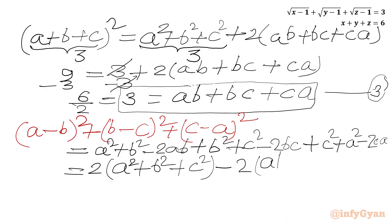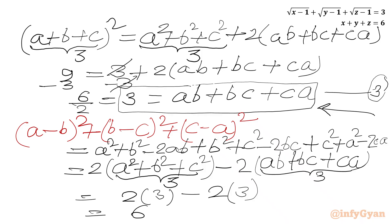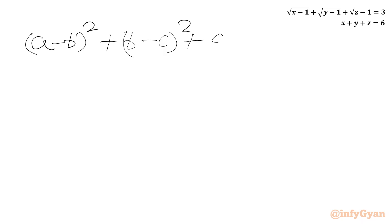In the bracket we have a squared plus b squared plus c squared minus (ab plus bc plus ca). As per equation 2, a squared plus b squared plus c squared equals 3, and from equation 3, ab plus bc plus ca equals 3. So we get 2 times (3 minus 2 times 3) equals 6 minus 6 equals 0.